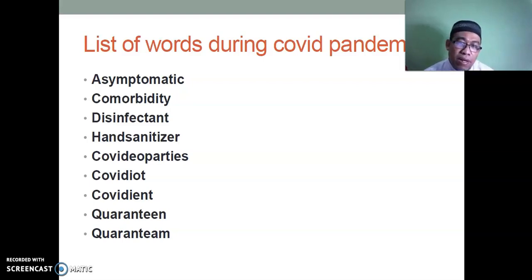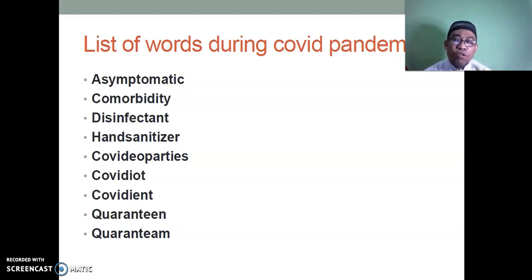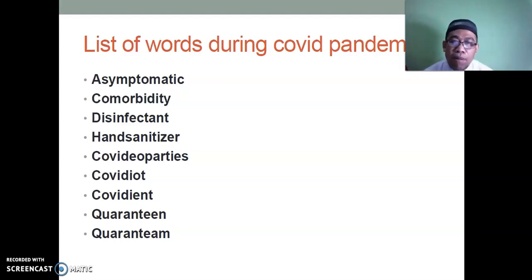Look at these words through the lens of morphological science. Analyze which morphemes are free, which are bound, what part of speech they belong to, and examine their morphological processes. You can check the etymonline.com website — an online etymology dictionary — so you can trace the origin of each word, from which century it was formed.